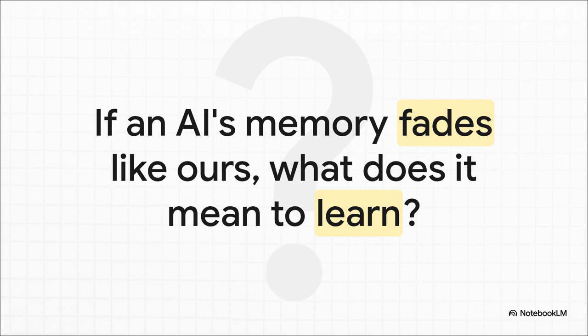And that just leaves us with this huge, thought-provoking question. We usually think of computer memory as perfect, absolute, and flawless. But this research points toward a future where AI memory could be much more biological, much more, well, human. So if an AI has to forget the little details to remember the big picture, just like we do, what does that really change about its journey to truly learn?